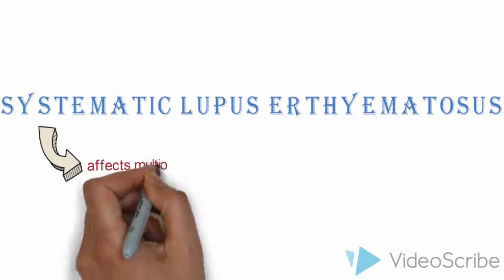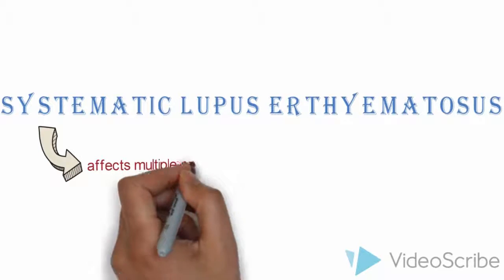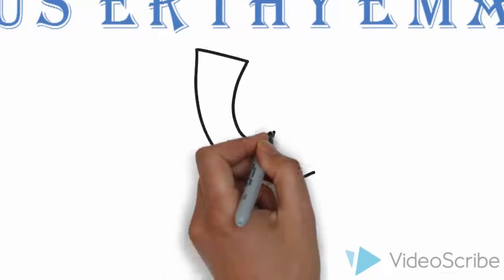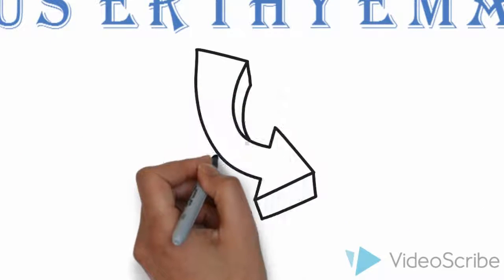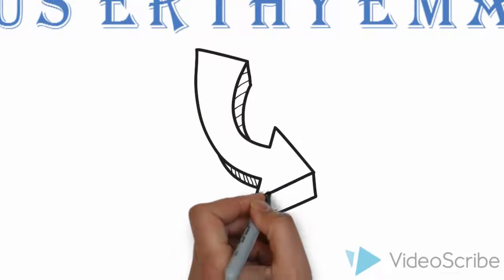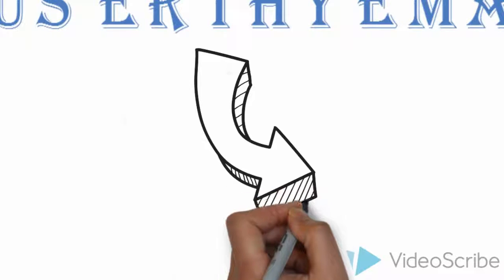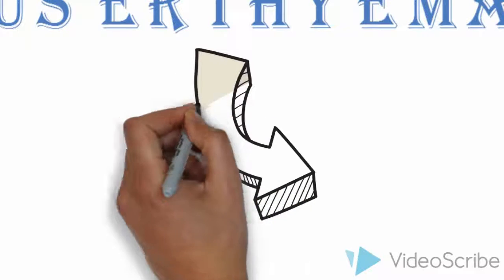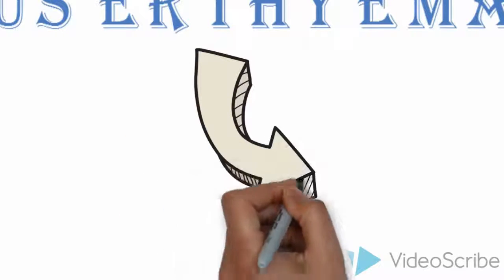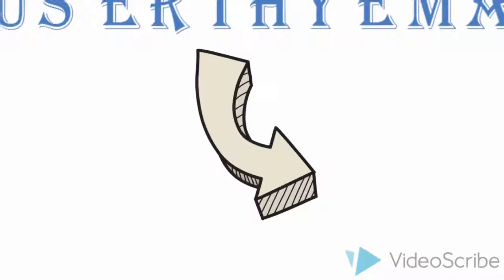And then we have erythematosus. What does it stand for? Basically, erythematosus is reddening of the skin, which we usually get when our skin is irritated.